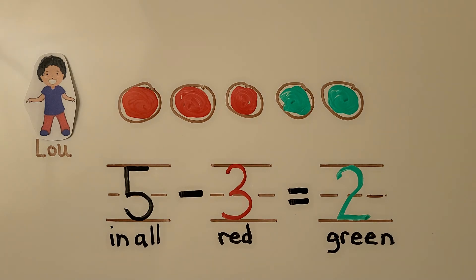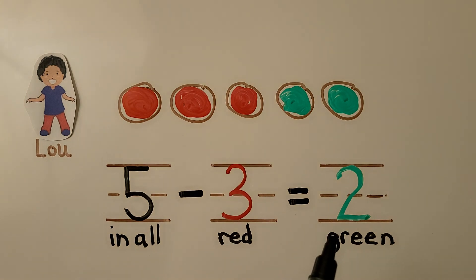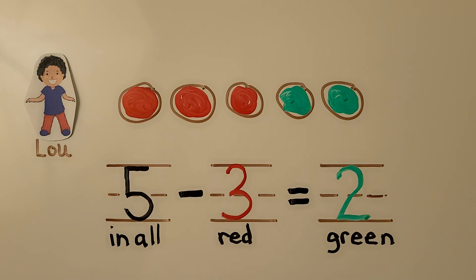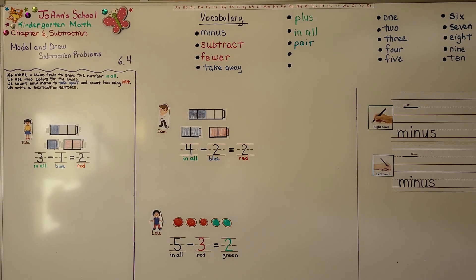Five minus three is equal to two. We write a subtraction equation to show how many in all, how many are red to take away, to show how many left over must be green. Drawing a quick picture can help us solve subtraction problems. We can use two colors and a cube train or a quick drawing to help us find how many are left. Our next lesson, 6.5, we're going to write subtraction sentences to complete subtraction equations. I hope you'll join me and I hope you have a great day. Bye!